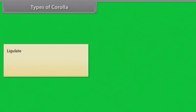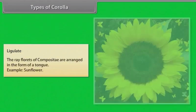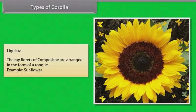Ligulate — the ray florets of Compositae are arranged in the form of a tongue. Example: Sunflower.